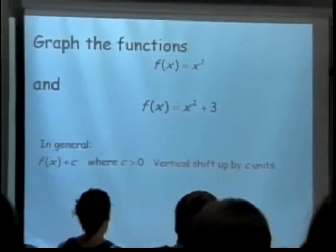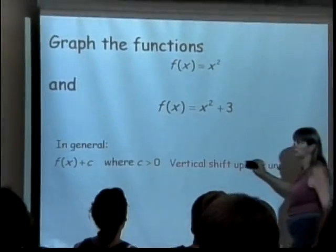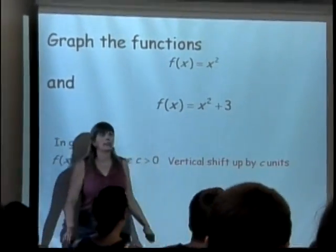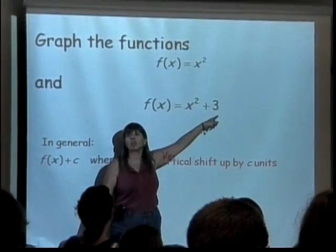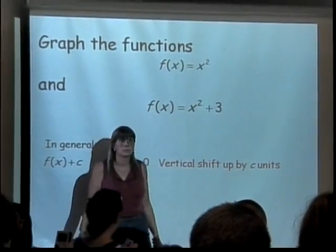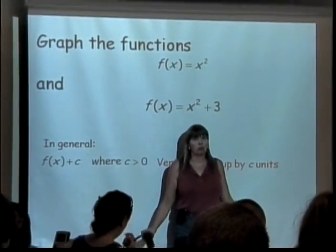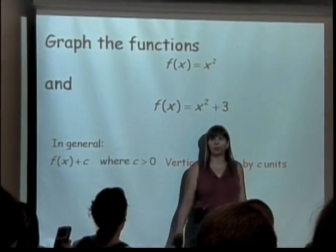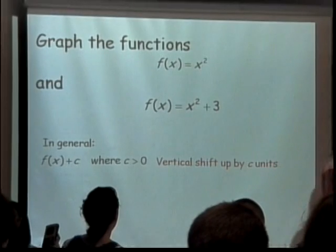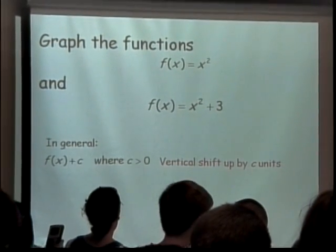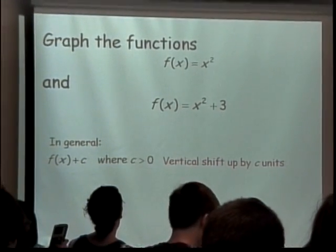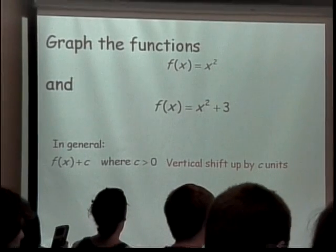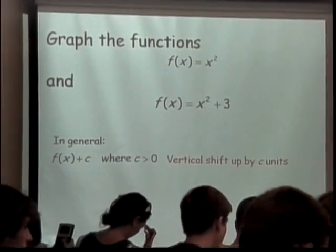I want you to graph f of x equals x squared and ignore this last line here for a moment. Then graph f of x equals x squared plus 3. What happens to the graph? It's displayed right here. What happens to that graph when you do plus 3 on the end? It moves up 3 units.